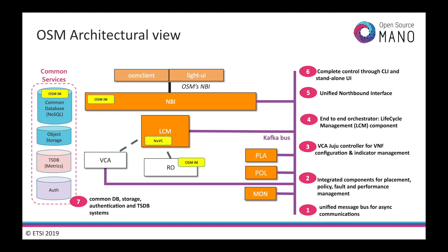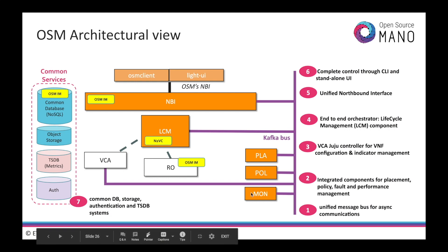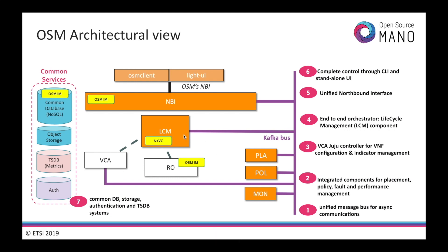This diagram summarizes the modular containerized services that OSM runs. A unified message bus provides asynchronous communications between components such as placement, policy manager, and monitoring services. LCM centralizes the orchestration, taking care of VNF management and indicators through VCA, and virtual resources through the RO. A unified Northbound interface makes all services programmatically available directly to external systems or for operators through the OSM CLI or dashboard. A collection of common services, also containerized, provides databases, storage, and authentication functions for the system.